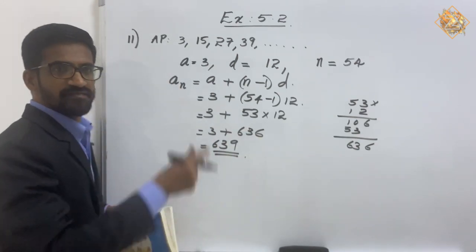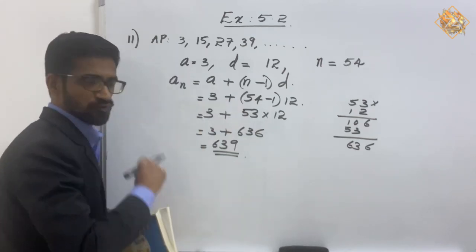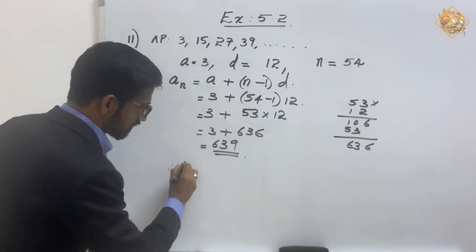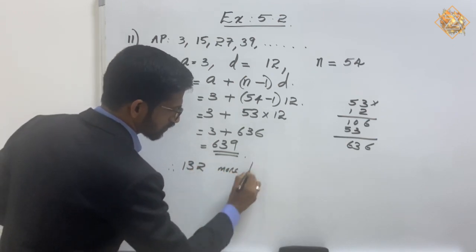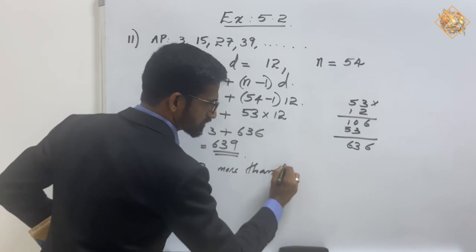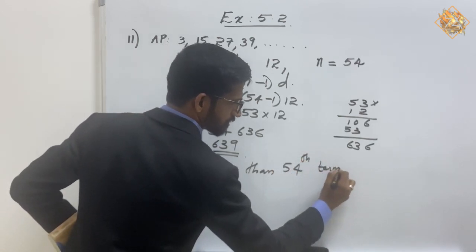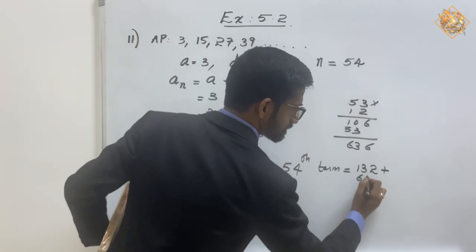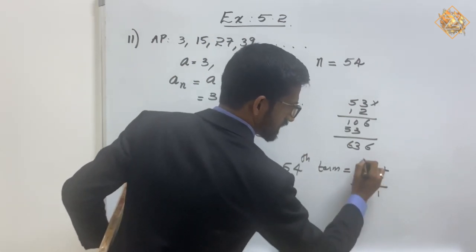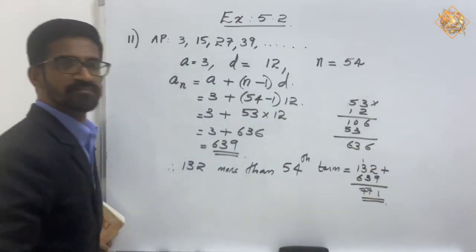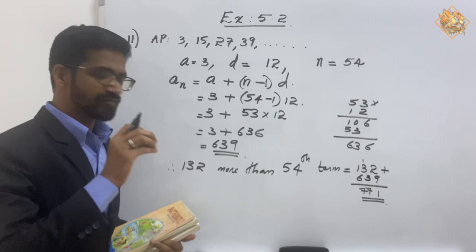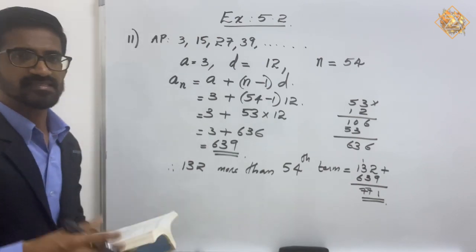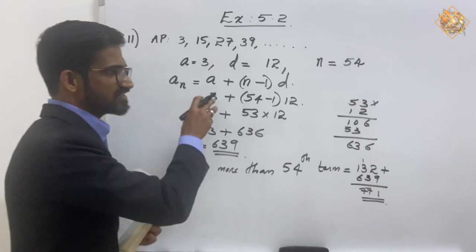Now the question is: which term of this AP is 132 more than the 54th term? We got the 54th term as 639. So 132 more than the 54th term equals 132 plus 639, which gives us 771.